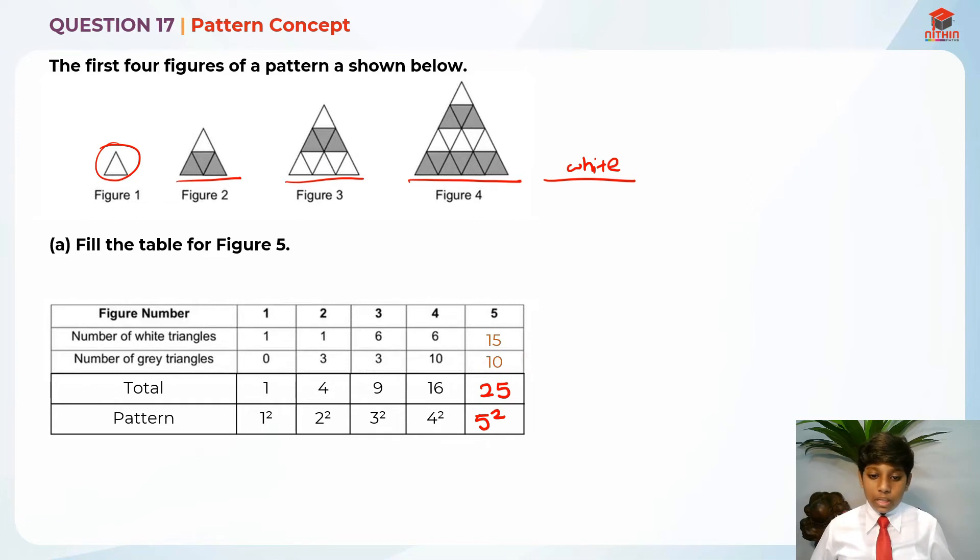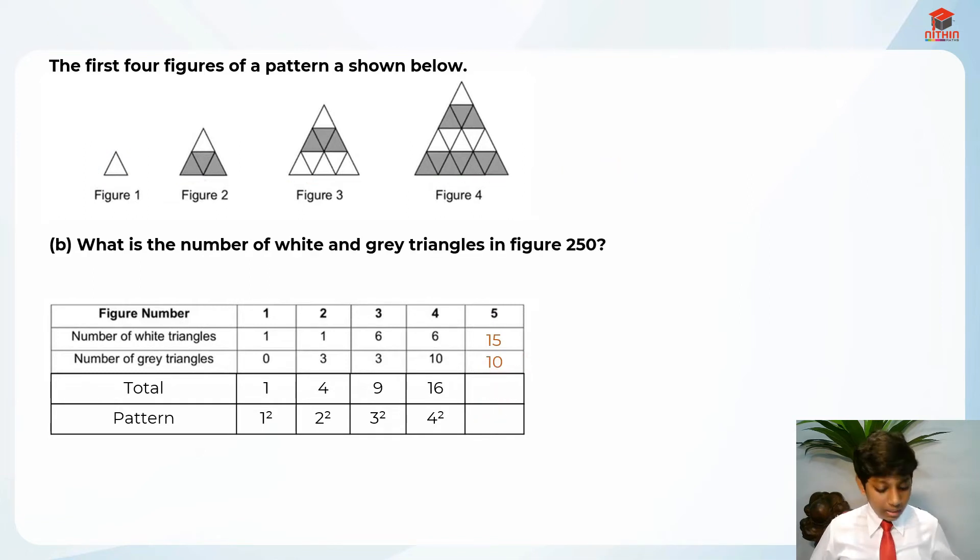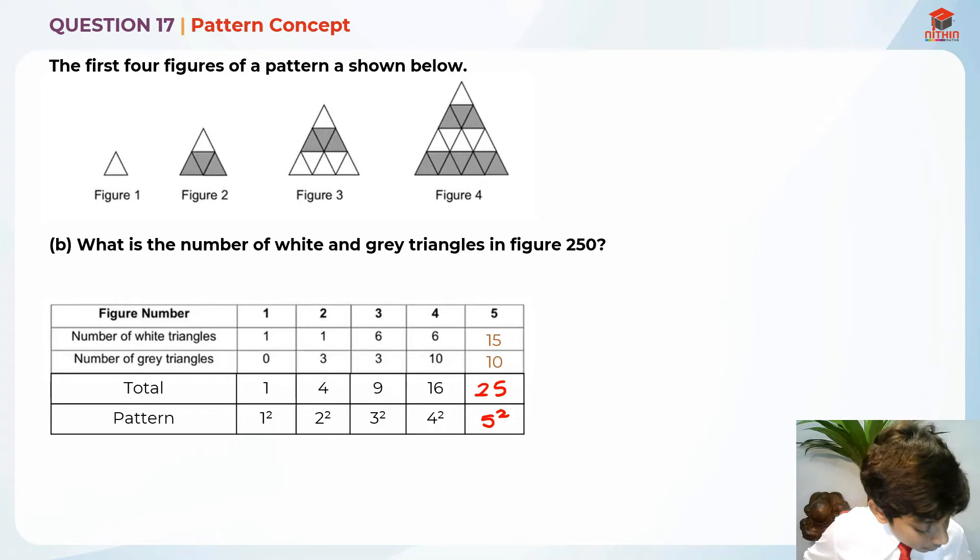So now let's move on to part B. Let me just write down this again, 5 squared and 25. So this is the question. Let's read it again. For part B, what is the number of white and grey triangles in figure 250? That's easy. We know the pattern already, which is figure number squared. So for figure 250, let me just add it here. 250. I'm only going to focus on these 2 rows. This is not applicable.